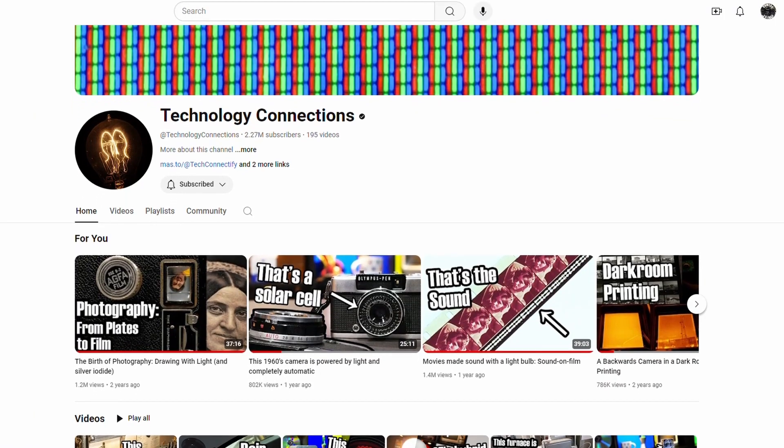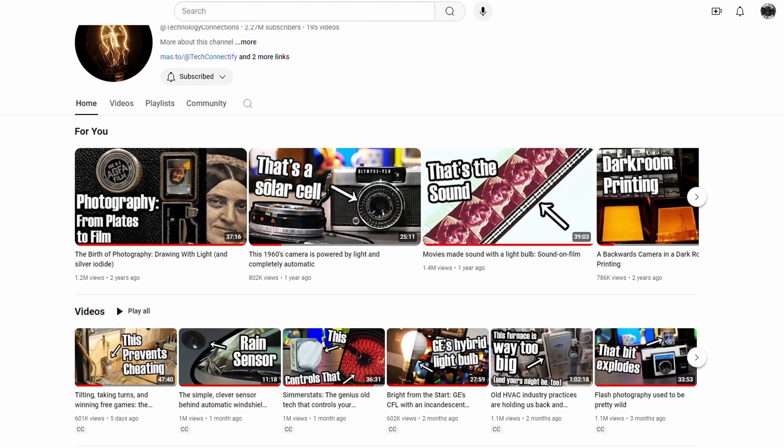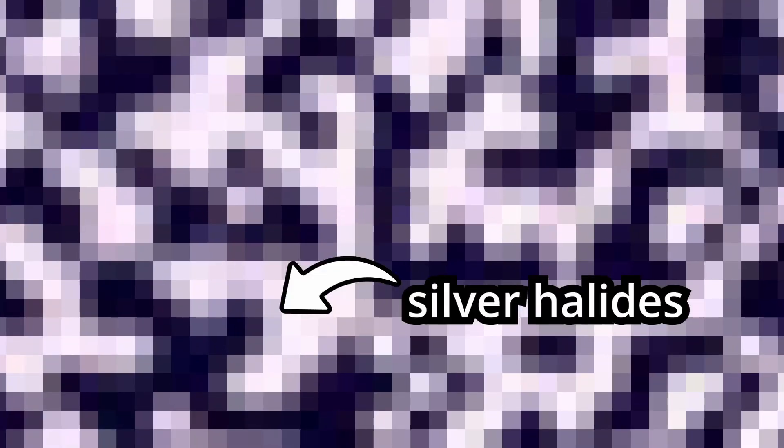Technology Connections did a much better job explaining this than I could ever do. So here's some links. Anyway, essentially how it works is there are a bunch of silver halide crystals inside the film, and blam! A photon of light hits one of them crystals and converts a tiny bit of it into pure silver. And then that silver acts like a seed,